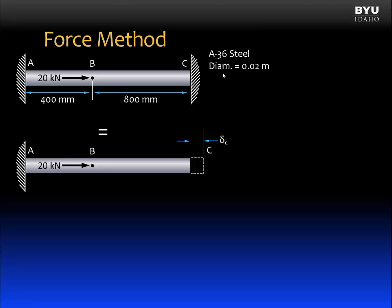Now using the principle of superposition, we can break this structure into two simpler structures. And I'm going to do that by first removing the wall at C and drawing the structure like this. And what's going to happen when I remove the wall at C? Well, the structure can now stretch under this applied load of 20 kilonewtons. And when it stretches, the end will deflect an amount we'll call delta C. That's the deflection at C as a result of this 20 kilonewton load.